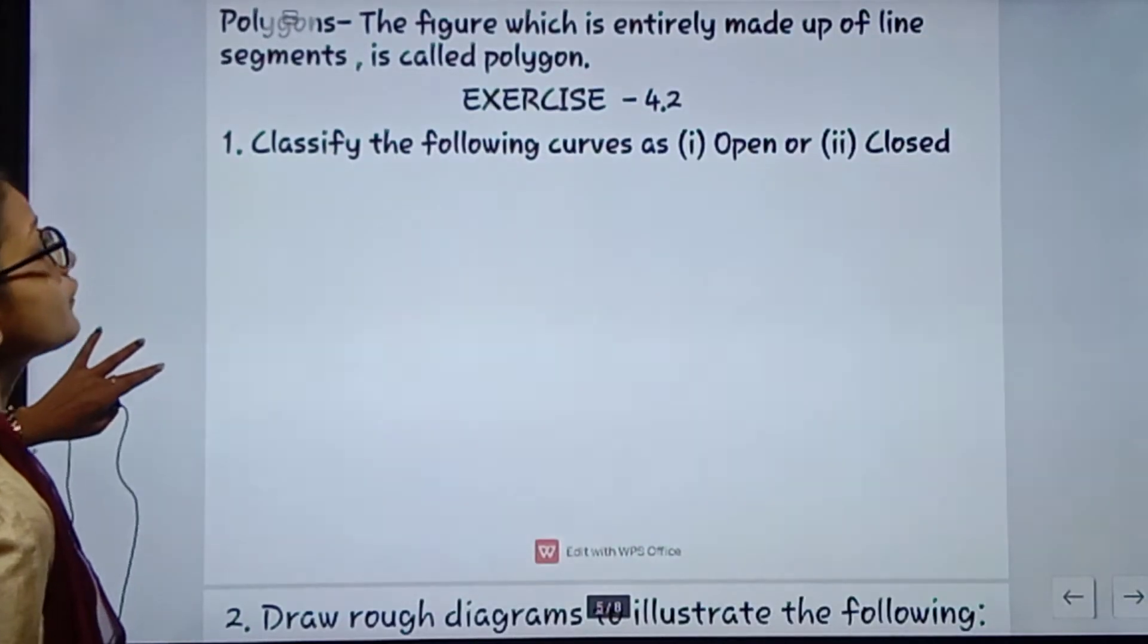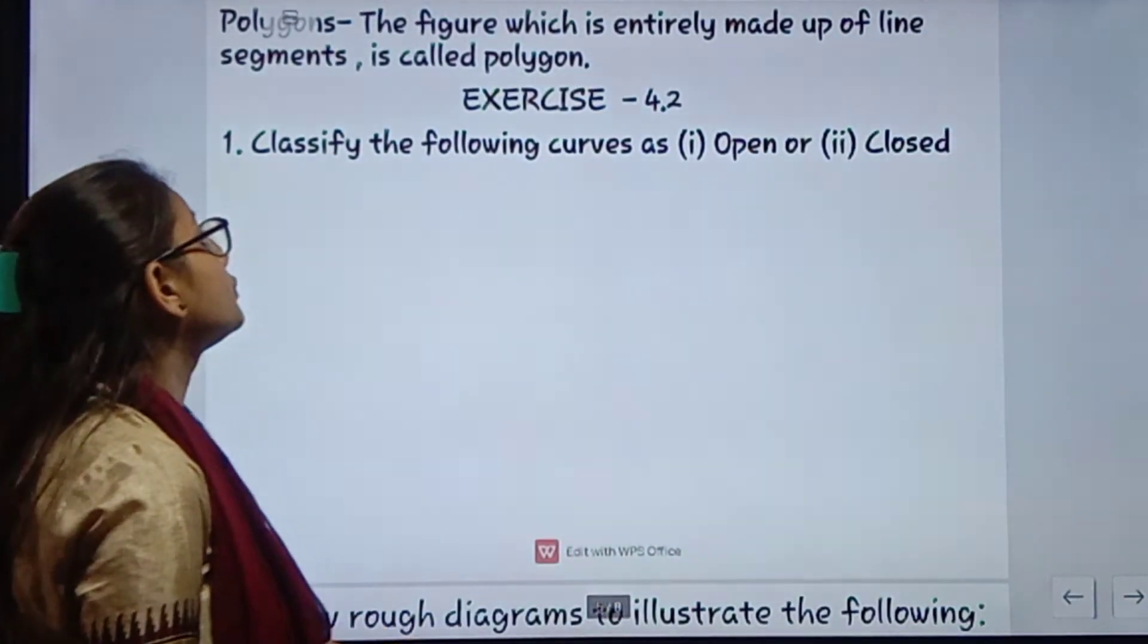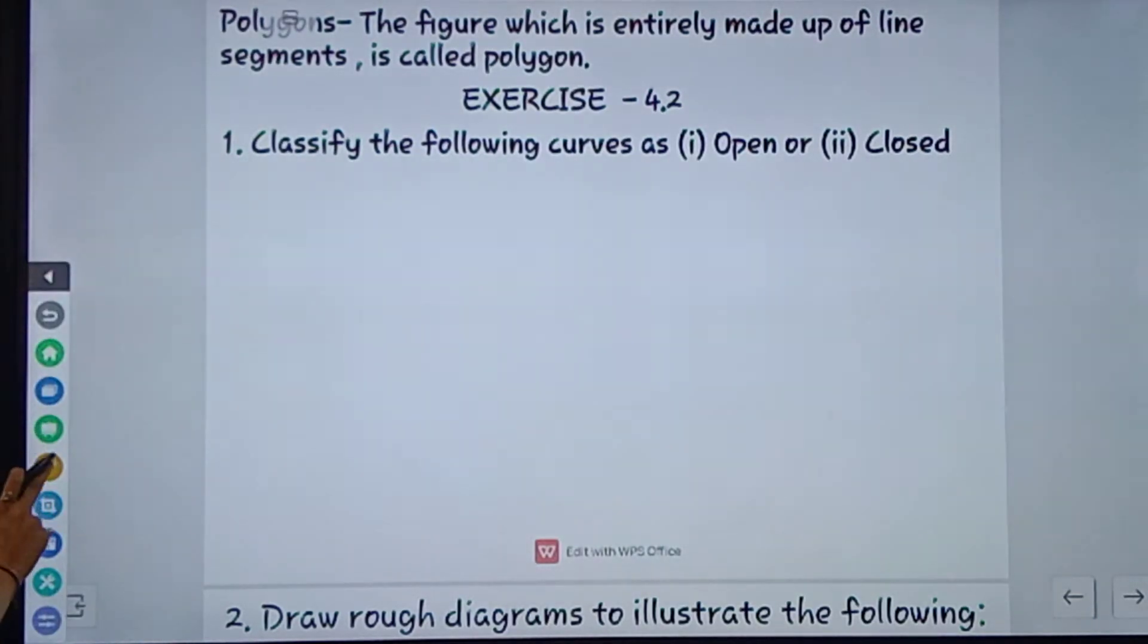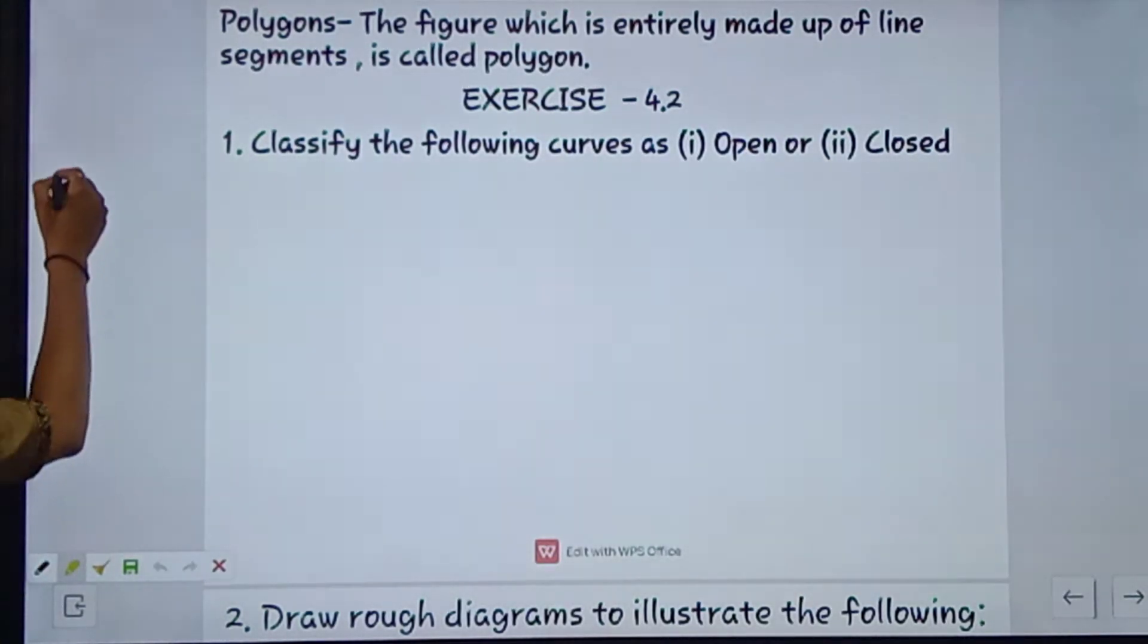Polygons - the figure which is entirely made up of line segments is called polygon. Polygons ki condition kya hoti hai bita - first is simple closed curve hoga. Like simple closed curve hoga.